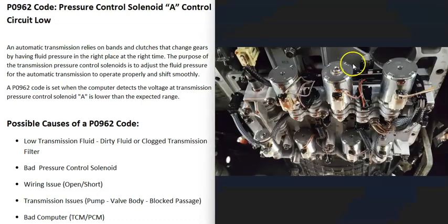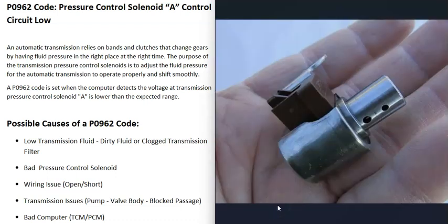What does this mean? Basically, automatic transmissions have a lot of solenoids built into them. These solenoids allow the computer to control the fluid pressure, which is then used to shift gears at the right time. When you get this P0962 code, the computer is seeing a problem with one of these solenoids — mainly the pressure control solenoid A — and it's going to need to be troubleshot to find out why.